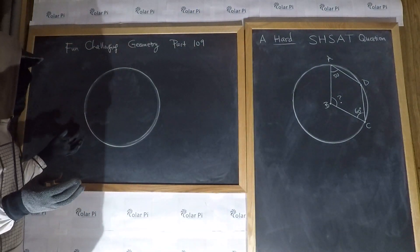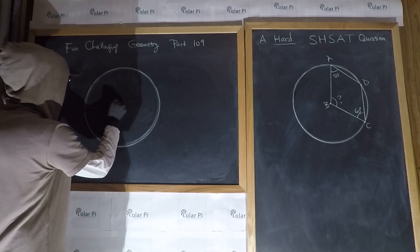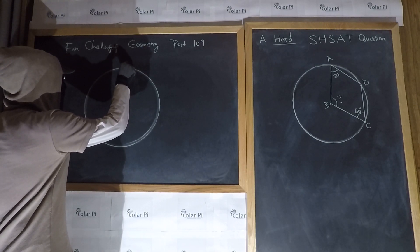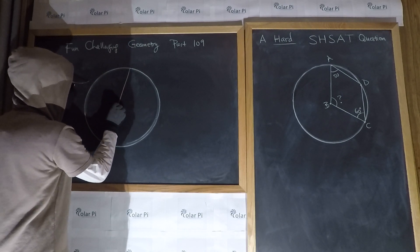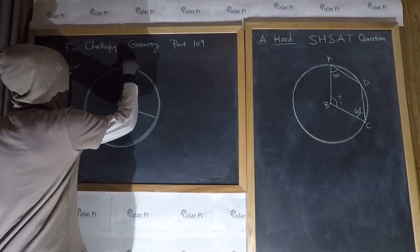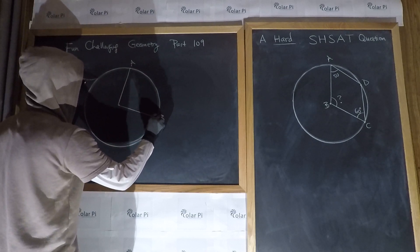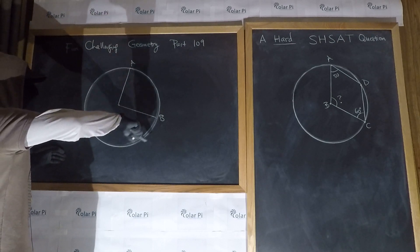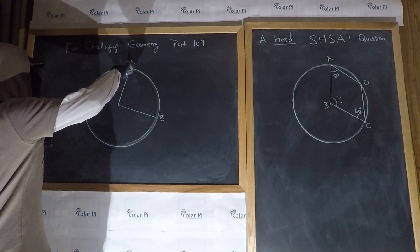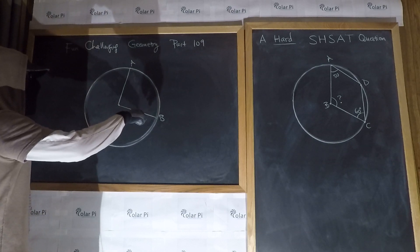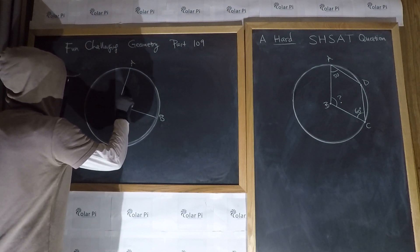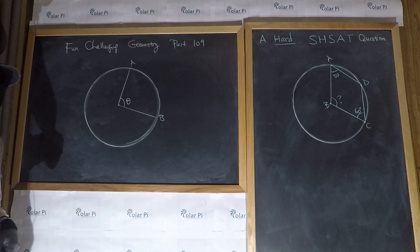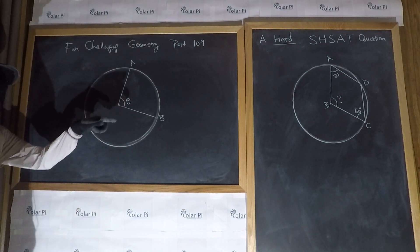It would appear that the helpful theorems in this problem are the theorem about the degree measure of an arc and a central angle being the same. That is, if we have minor arc AB here — minor arc AB because major arc AB is behind it — the degree measure of minor arc AB is the same as the degree measure of the central angle.